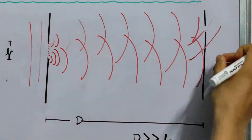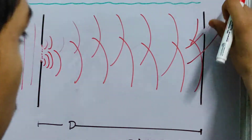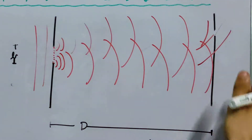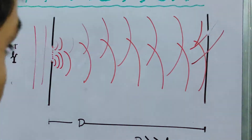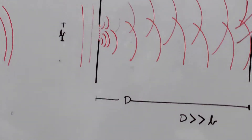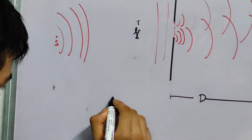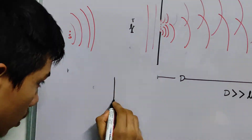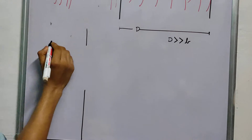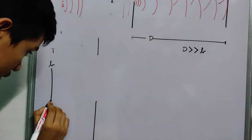We expect some interference pattern — there may be maximum intensity at some points, some minimum intensity, and you might see completely dark bands or dark fringes. Let us now enlarge the setup to analyze what actually happens.